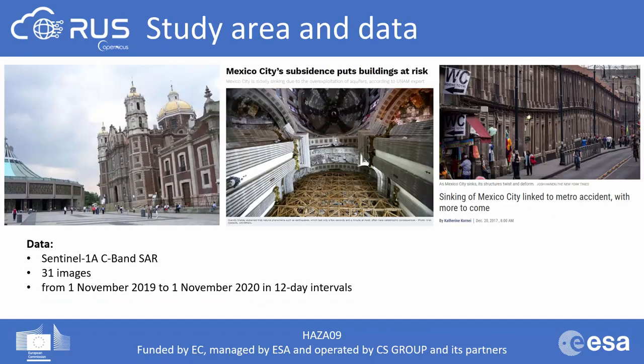As for our study area, we will look at Mexico City. The city with its extreme subsidence is an ideal study case, having grown from 78 km² to a metropolis about 100 times larger. Groundwater extraction to provide water for its growing population has caused some parts of Mexico City to sink by more than 9 meters since the beginning of the 20th century. Currently some parts are sinking about 30 centimeters per year. We will use 31 Sentinel-1 images acquired from November 1st, 2019 to November 1st, 2020 in 12-day intervals.